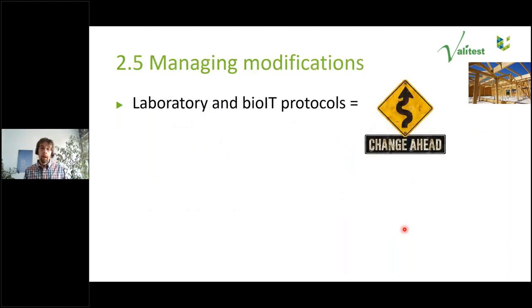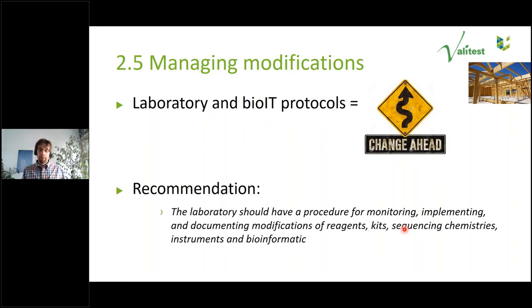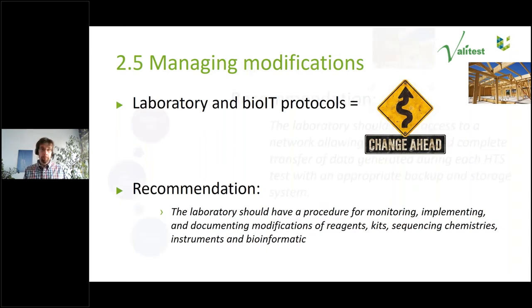Managing modifications is quite important. An ELISA test may remain unchanged for years or decades, but with HTS you have regular upgrades: machine upgrades, library preparation kit upgrades, and most frequently upgrades of bioinformatic protocols — new software offering greater speed, accuracy, or specificity. From the beginning you must think about how to monitor, implement, and document modifications applied in the laboratory: reagents, kit versioning, the sequencing machine, and the bioinformatics.